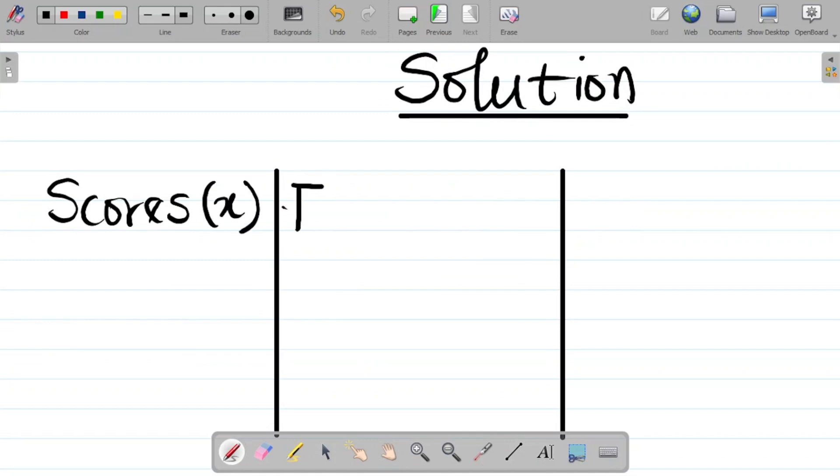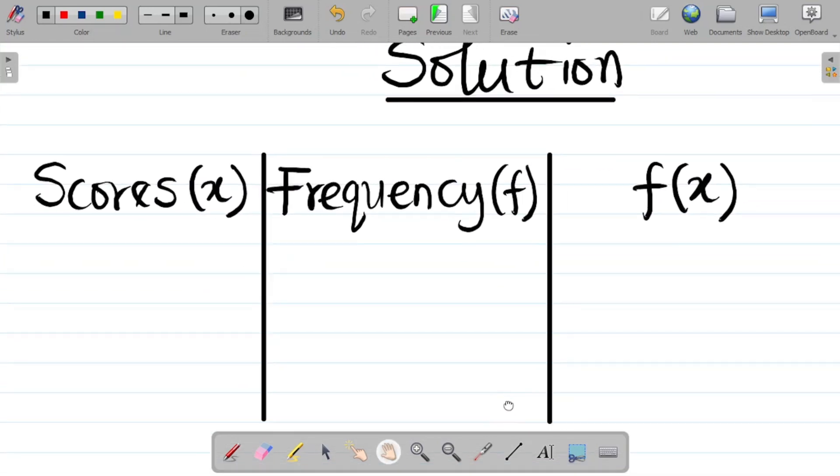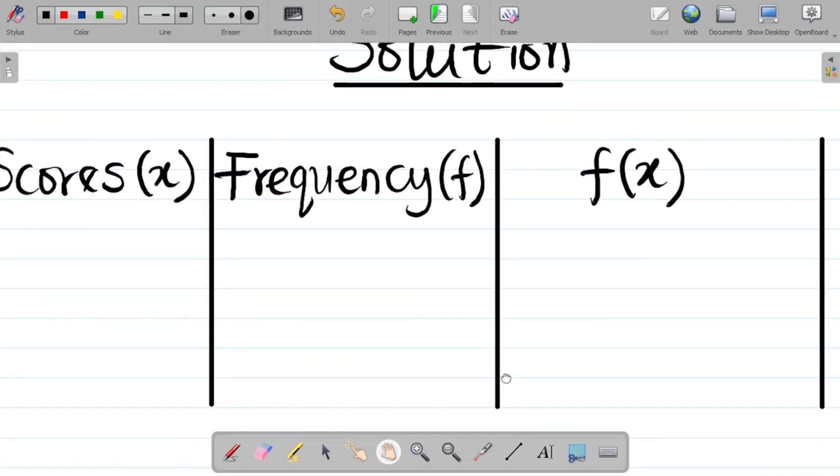Next up, let's look at the frequencies. That's a small f there. The next thing there will create a column for the product of the score and the frequency. We'll call it fx. So what fx means is f times x. That's the product of the scores and the frequencies.